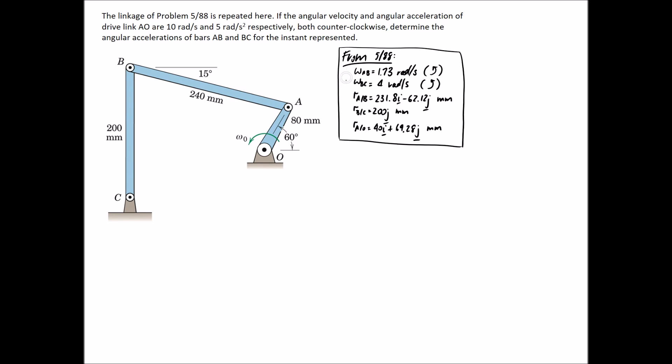That's what fell out of question 5/88. So I've just copied them down here. Please go see that question if you want to know where they came from. The other things that we're going to reuse from 5/88 are the radiuses of each of the different members. Again, if you want to see where they came from, go back and look at the analysis.